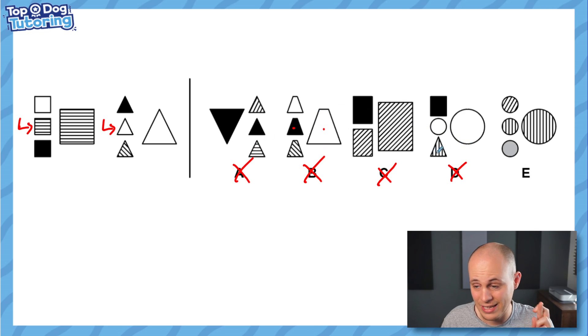Now in B it's black and white so that doesn't work and it leaves us with E where fingers crossed if we've been correct in our thinking is going to work and of course it does. We've got vertical lines in the middle and on the shape to the right. Amazing that's how we do it.